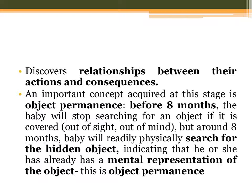An important concept acquired at this stage is object permanence. Before eight months, the baby will stop searching for an object if it is covered — out of sight, out of mind. But around eight months, the baby will physically search for the hidden object, indicating that he or she has a mental representation of the object. This is object permanence.